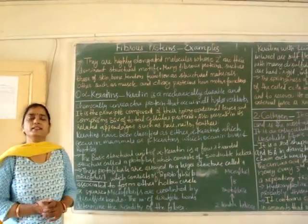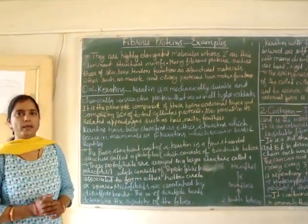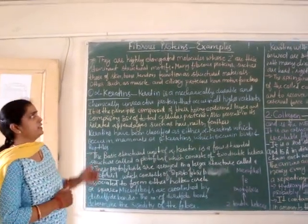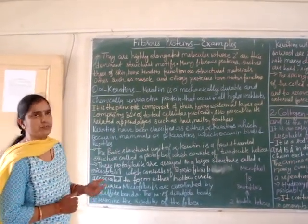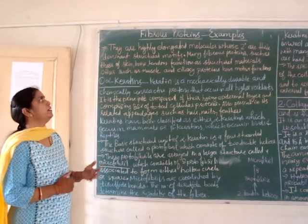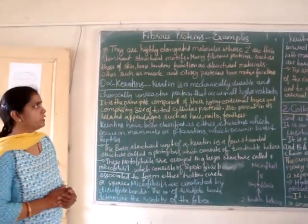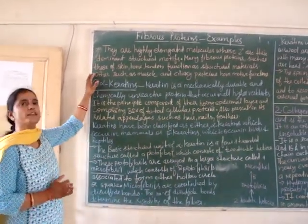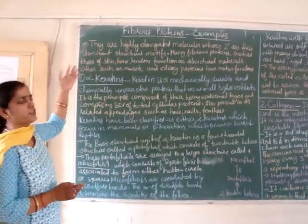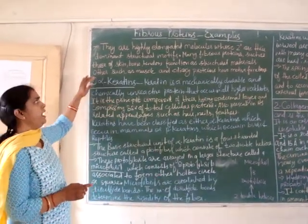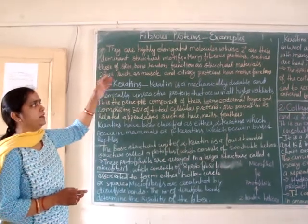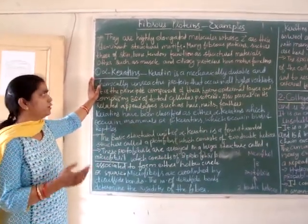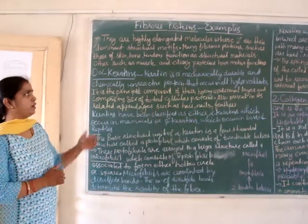Hello everyone. Today we will see the examples of fibrous proteins. In the previous video we have seen what fibrous proteins are. They are highly elongated molecules whose secondary structure are their dominant structural motifs. Many fibrous proteins such as those of skin, bone, and tendons function as structural materials, and others such as muscle and ciliary proteins have motive or motile functions.